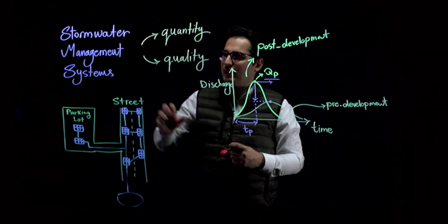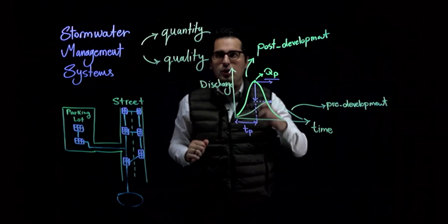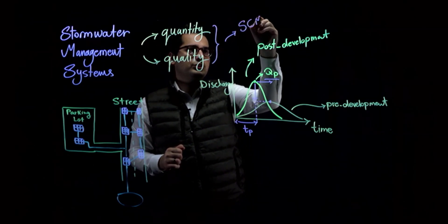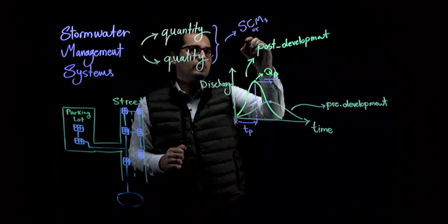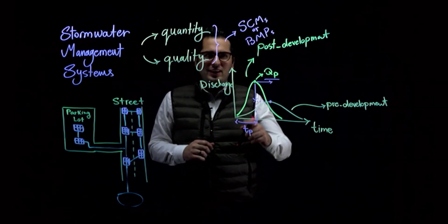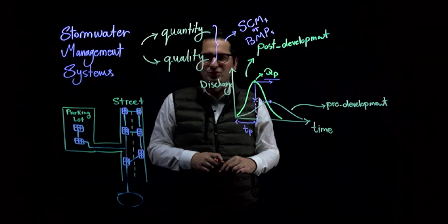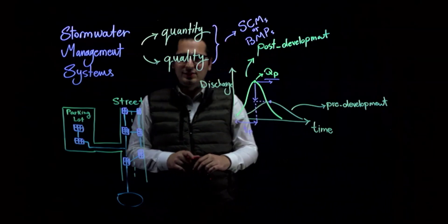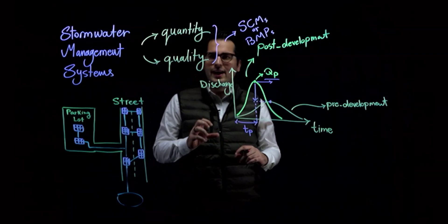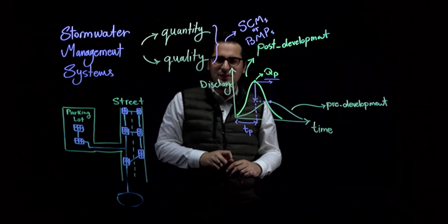In order to achieve quantity control and quality control, we need components of stormwater management systems. These components are called stormwater control measures or best management practices. Examples include infiltration basins, vegetated swales, and detention and retention basins, which we will discuss in the next parts of this video series.